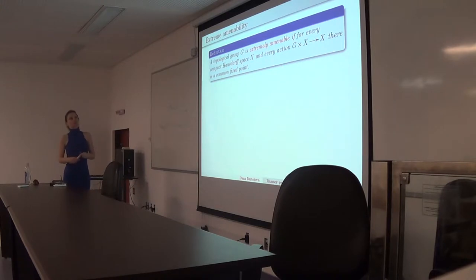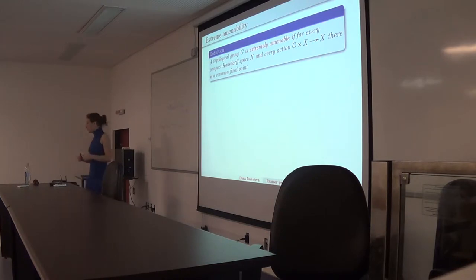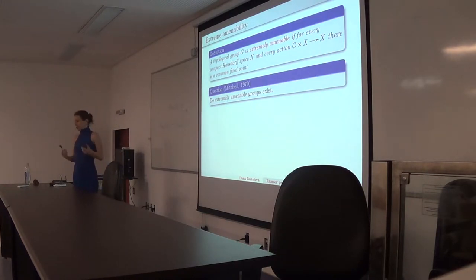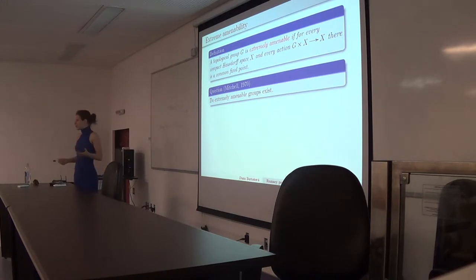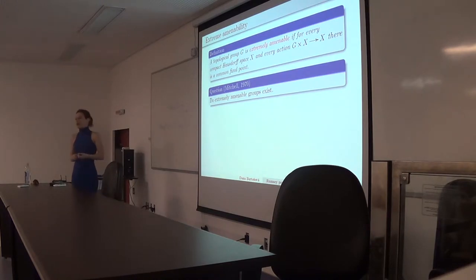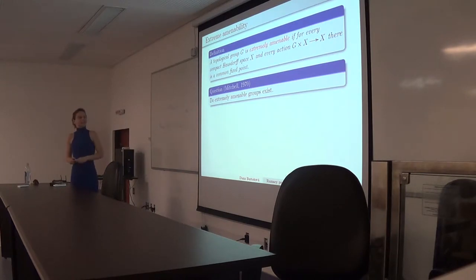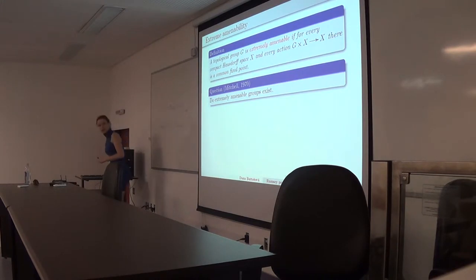This is exactly the definition of an extremely amenable group. A topological group is extremely amenable if for every compact Hausdorff space and every action of the group on it, there is a common fixed point. It was not obvious for a while whether such groups exist. Mitchell first asked in 1970 whether such groups exist at all. It is often hard to prove even one fixed point for one map, so having a common fixed point for arbitrary spaces and actions was not obvious.